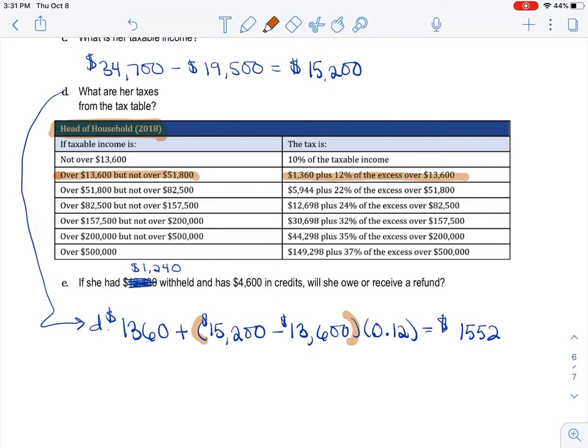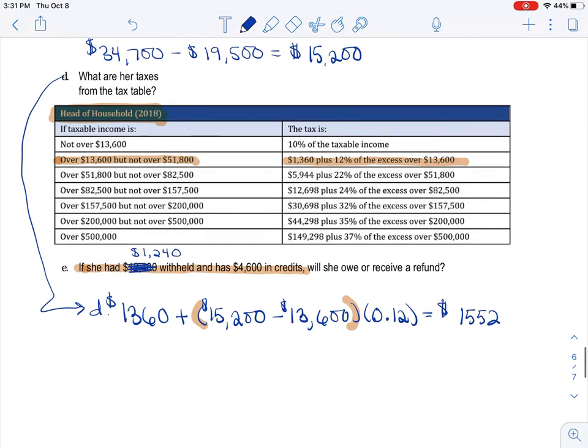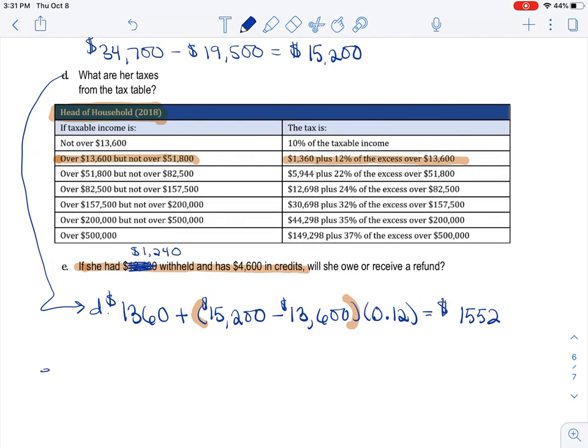$1,552. Okay, so that's what she owes. But now, we're going to take into effect her credits and what has been withheld from her paycheck throughout the year. So, I'm going to take $1,552, take away $1,240, take away her credits. And when we do all of that, again, I need to be consistent, dollar signs. When we do all of that, we get negative $4,293.